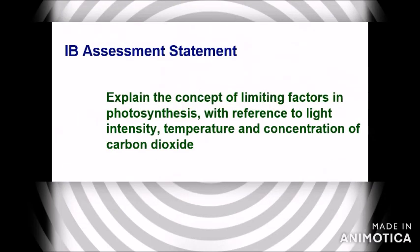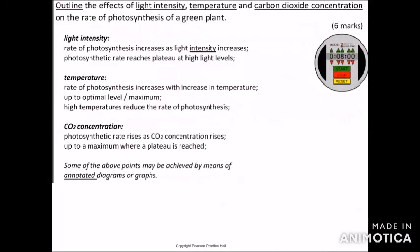The next assessment statement: explain the concept of limiting factors in photosynthesis with reference to light intensity, temperature, and concentration of carbon dioxide. The rate of photosynthesis increases as light intensity increases, and the photosynthetic rate reaches a plateau at high light levels. The rate of photosynthesis increases with an increase in temperature up to an optimal maximum, then high temperature reduces the rate. The photosynthetic rate also rises as carbon dioxide concentration rises, up to a maximum plateau.